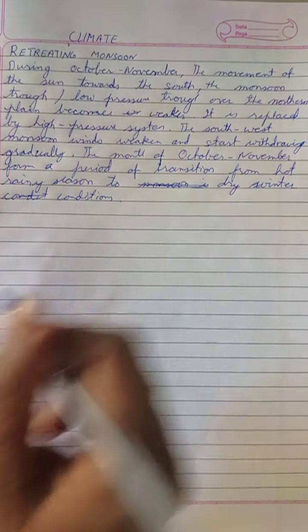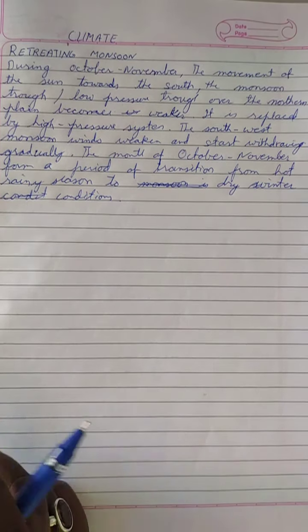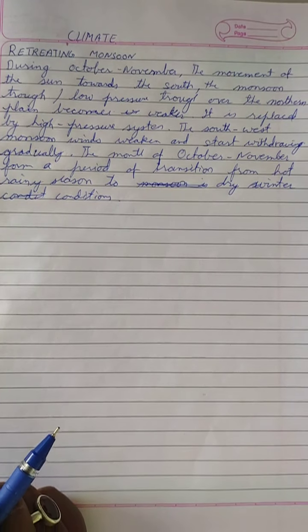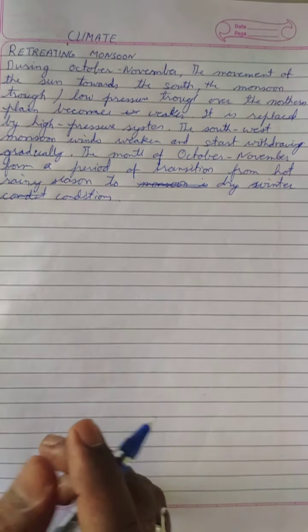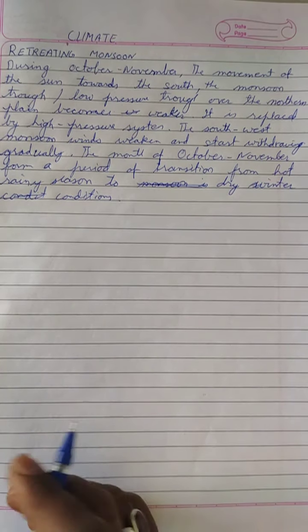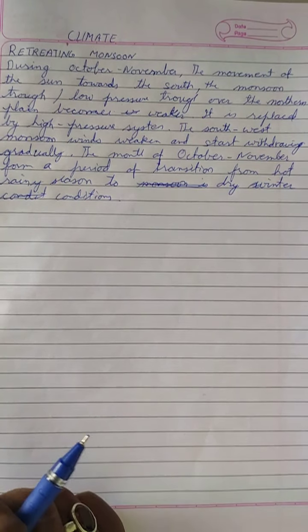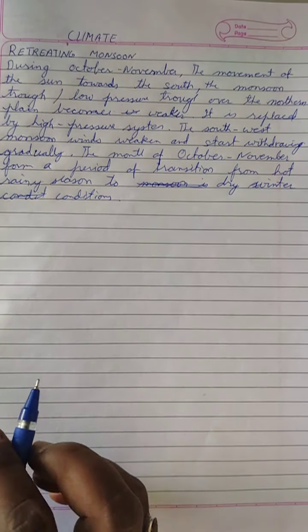In winter it is cold and dry, and therefore our skin gets dried up. But in summer it is hot and there is a lot of moisture present in the atmosphere, so it is always slippery and wet. In winter season, it is dry.